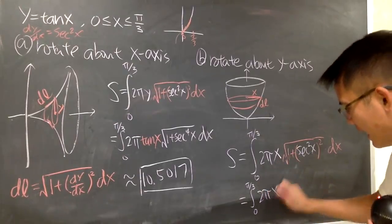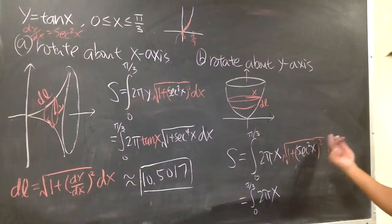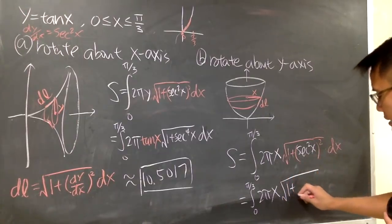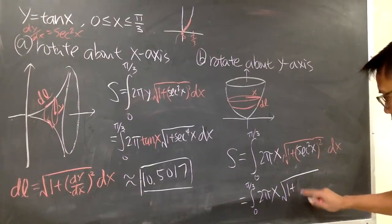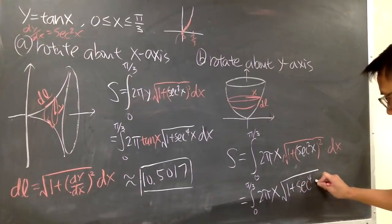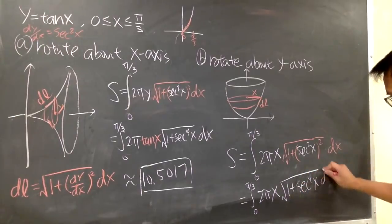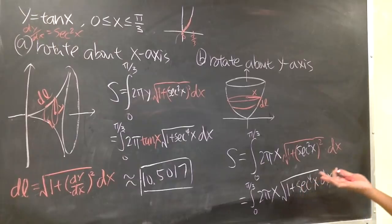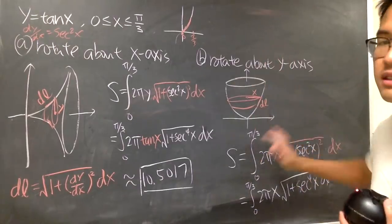2 pi x. And I will just pretty much write this down. Square root of 1 plus secant to the fourth power x. And then this is dx, like that. This will be the setup for this situation.